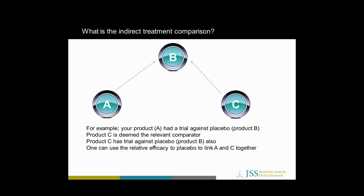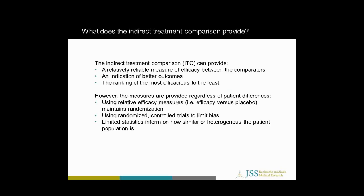So what does this new technology — the indirect treatment comparison — provide? It's a relatively reliable measure of efficacy between the comparators, giving you an indication of better outcomes. By outcomes, I mean it could be efficacy or tolerability, but it can only be one outcome assessed at a time. When used to evaluate multiple treatments, it can also give you the ranking from most efficacious to least. The reason it's relatively reliable is because relative efficacy measures maintain randomization, and you are only using randomized controlled trials to limit bias — no observational studies.